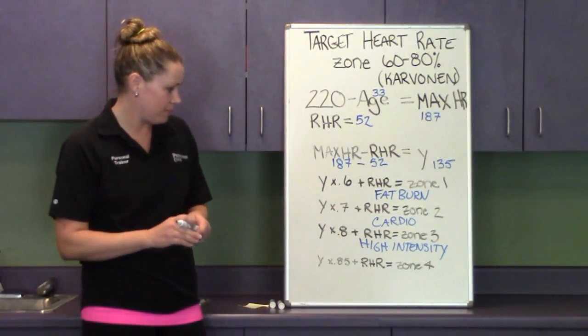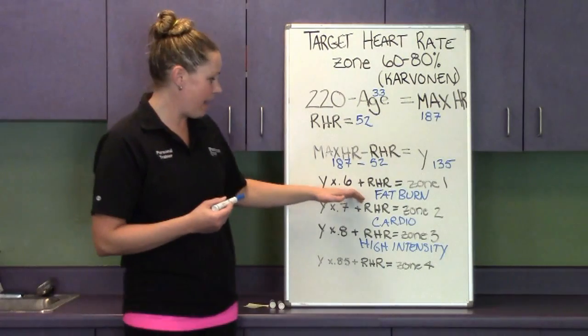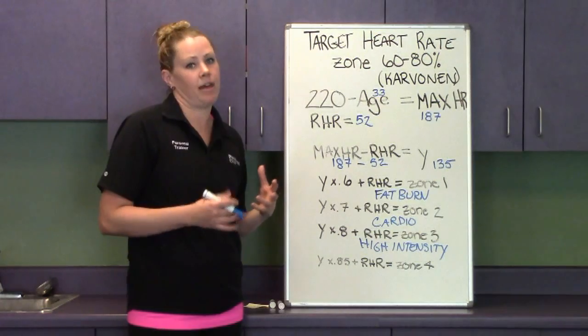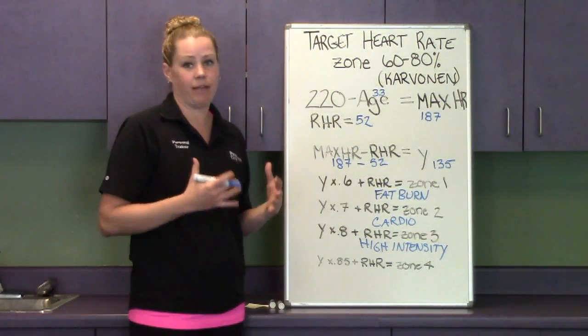Now what these different zones mean is in the fat burn zone, 60 to 70 percent, it's going to be a little bit slower. Your main source of energy is fat in that zone.